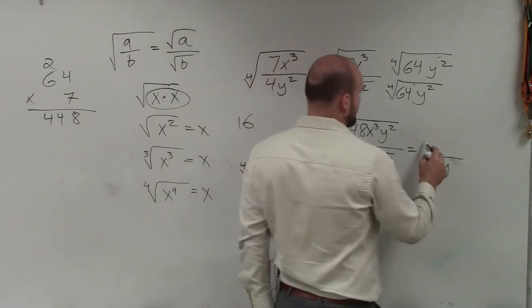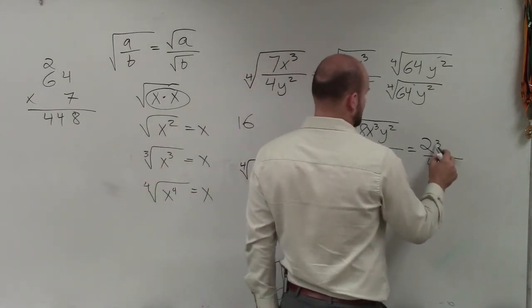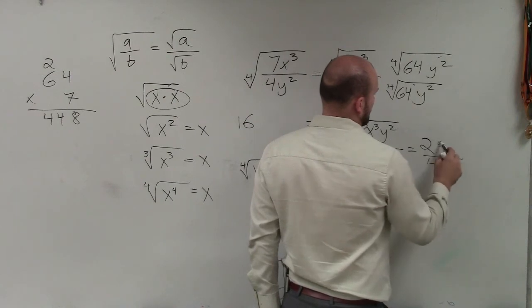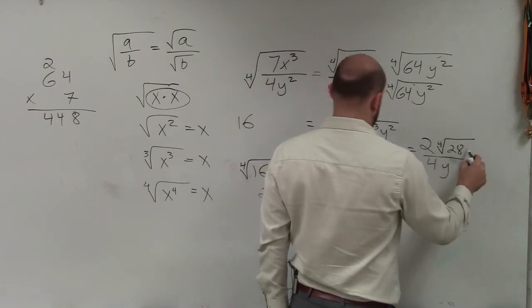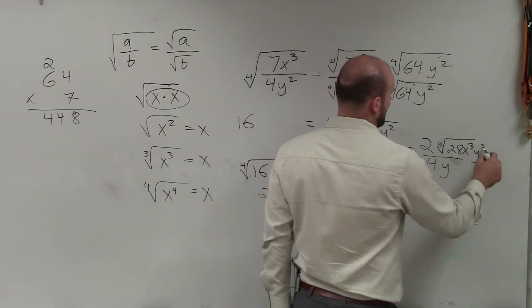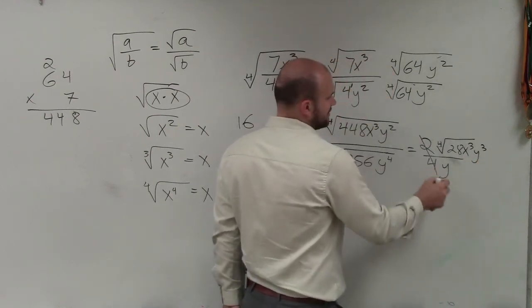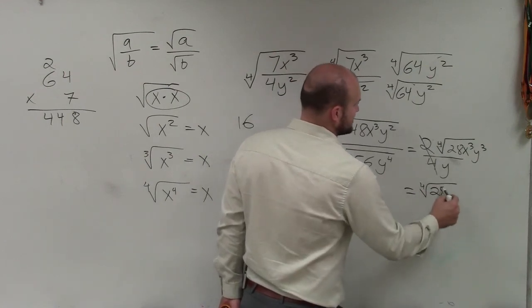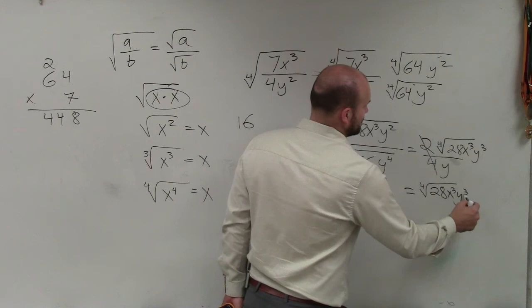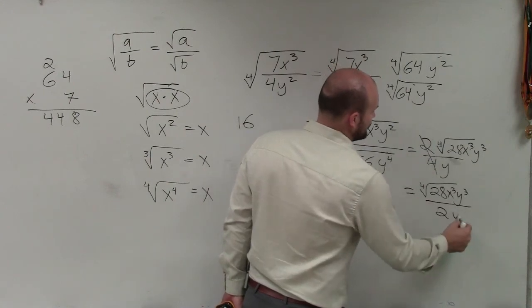So therefore, really my answer is 2 times the fourth root of 28 times x cubed y cubed. And then this obviously can be reduced down to 1 half. So my final answer is the fourth root of 28 x cubed y cubed divided by 2y.